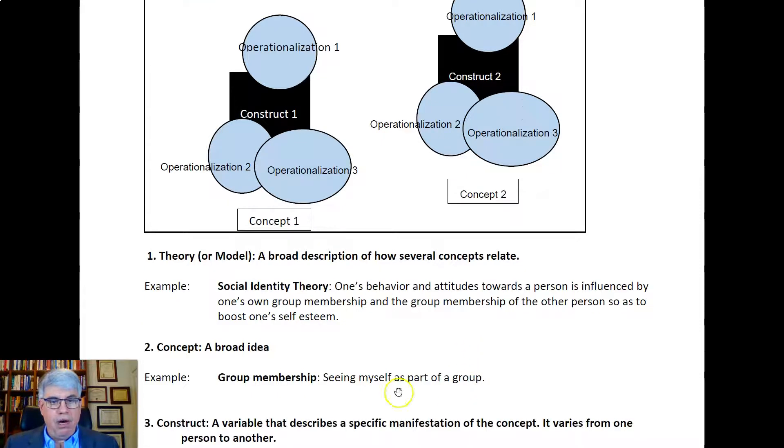The next thing is a construct. That's a variable that describes a specific manifestation of the concept. It varies from one person to another. It's like a variable that we're going to be able to measure, and my value of that construct will be different than yours. It depends on the person.